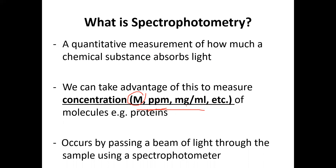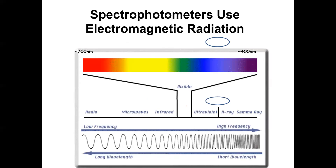This measurement occurs inside the machine by passing a beam of light through the sample using the spectrophotometer. The spectrophotometer uses electromagnetic radiation, which ranges from radio waves to gamma rays — including microwaves, infrared rays, UV light, and X-rays. Radio waves have low frequency and long wavelength, while gamma rays are the most energetic, with high frequency and short wavelength.